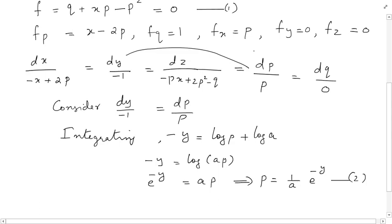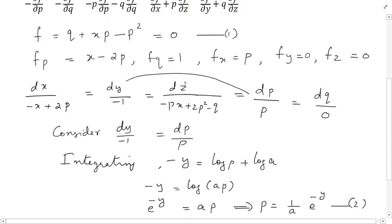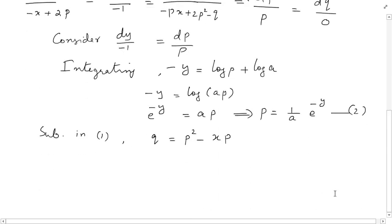Substituting p into the first equation, q equals p squared minus xp equals (1/a²) e to the power minus 2y minus (x/a) e to the power minus y. These are our expressions for p and q.